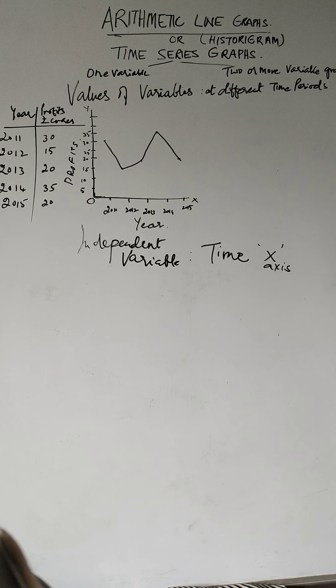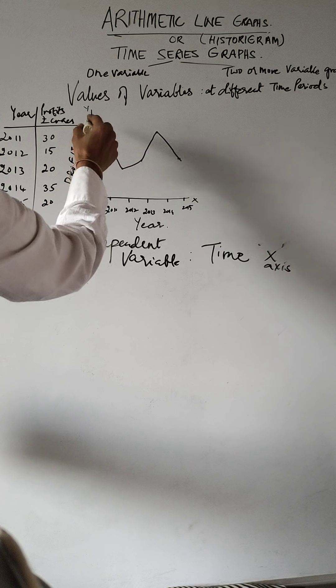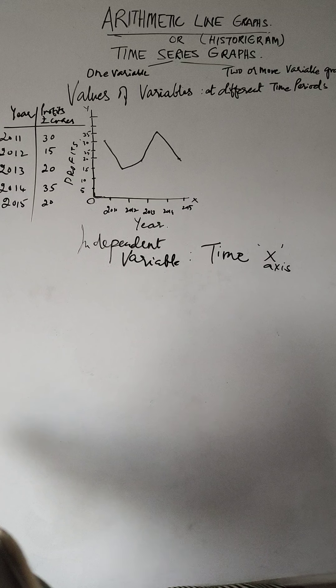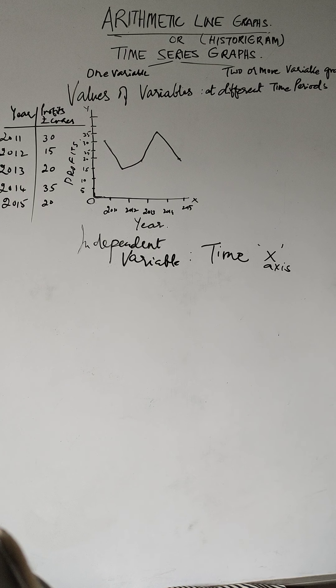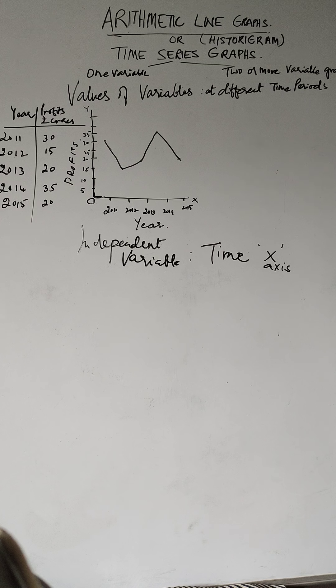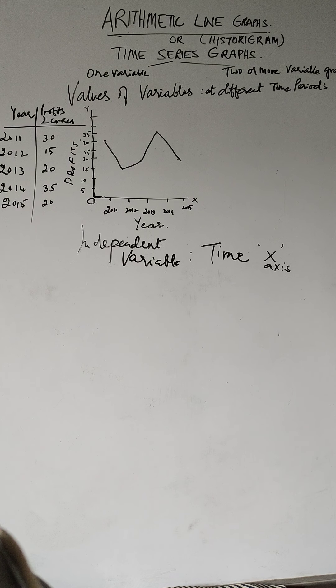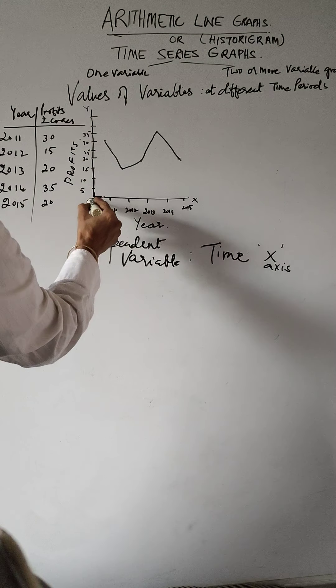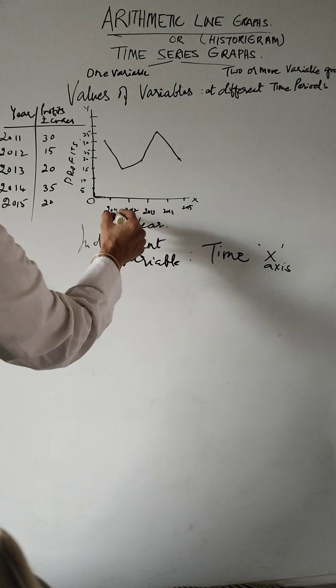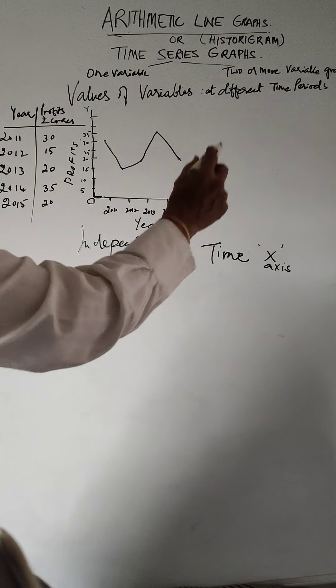The dependent variable is taken on the y-axis, whatever - profits, marks, or production, whatever is on the y-axis, which is dependent on showing which year, how much was there. The scale along the x-axis must start along with zero, and the scale along the y-axis should start from the time period - the year, month, week, according to the problem. When talking about the y-axis, it starts from zero, but here it's not the zero year. It'll start from the year, month, week, minutes, seconds, whatever you want to show.